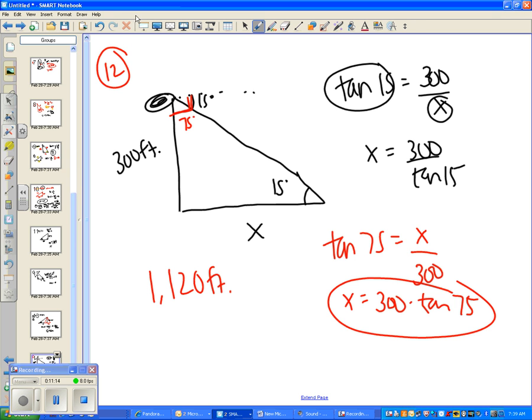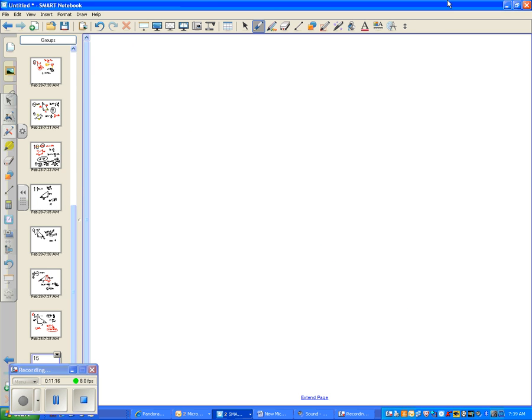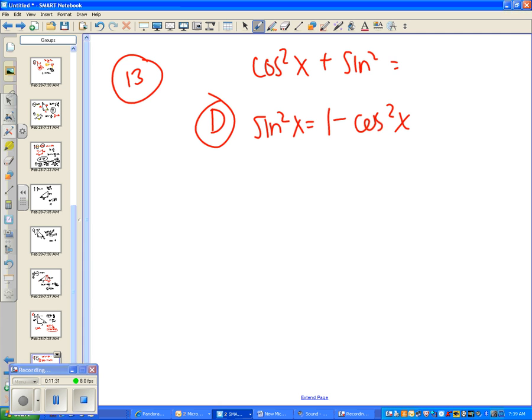Okay, the last one, number 13. It was again on that standard 19 worksheet we did in class. Which of the following is true? It should have been D sine squared x equals 1 minus cosine squared x. Because the formula we're coming from is cosine squared plus sine squared is always going to equal 1. And all they did was get the sine squared by itself, and to do that, they just subtracted the cosine squared x from both sides. So D was the correct answer.